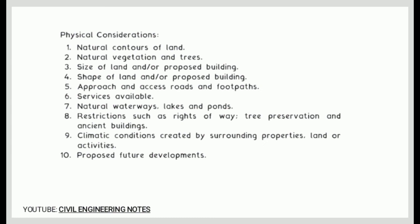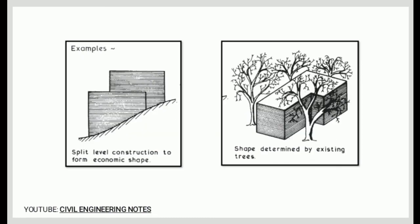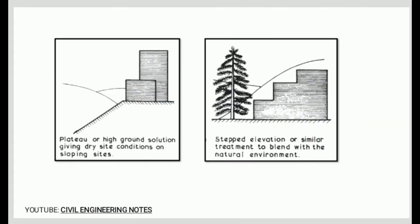To note, the physical environment within which a construction project is sited may impact considerably on its development, as construction projects are always affected by physical influences. The geographical location of a project, ground conditions, and weather patterns are the most common examples. These include split-level construction to form economic shape, shape determined by existing trees, plateau or high-ground solution giving dry site conditions on sloping sites, and stepped elevation or similar treatments to blend with the natural environment.